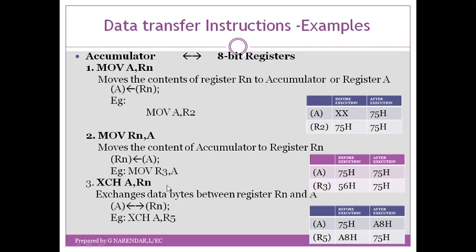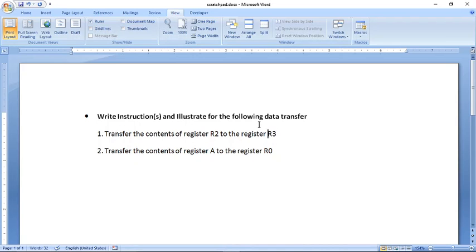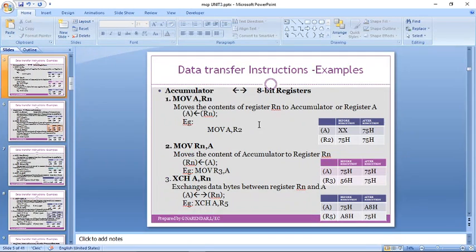So we have learned three instructions so far which are used to copy data between accumulator and 8-bit registers. To transfer data from 8-bit register Rn to accumulator, use MOV A, Rn. To copy data from accumulator to any 8-bit register, use MOV Rn, A. To exchange data between accumulator and any 8-bit register Rn, use XCH A, Rn.